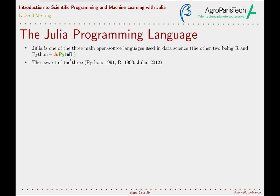What is really interesting is, if you see here, I put the years when each programming language was released. You can see that of the three, Julia is by far the youngest, having barely 10 years, while both Python and R have more than 30 years of development. So Julia is relatively young compared with the other two languages.